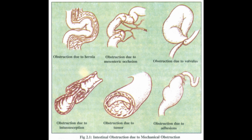2. Neurogenic or adynamic obstruction (paralytic ileus): decreased impulses to bowel for propulsive movements, interference with the nerve supply to the intestine resulting in decreased or absence of peristalsis. Causes include inflammatory reactions (acute pancreatitis, appendicitis), electrolyte abnormalities especially hypokalemia, lumbar spinal fractures or spinal cord injury, abdominal surgery, and shock. 3. Vascular obstruction: impaired blood supply to a portion of the intestines resulting in ischemia and gangrene of the bowel, due to clot/thrombosis, compression of the vessel, mesenteric artery occlusion, mesenteric vein thrombosis, and atherosclerosis.